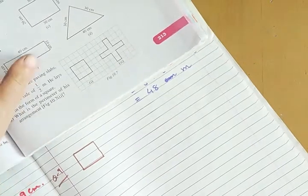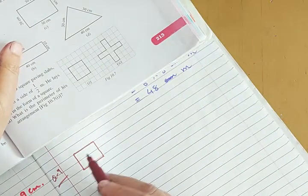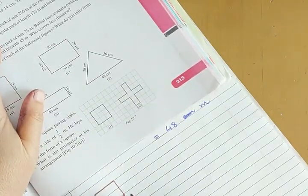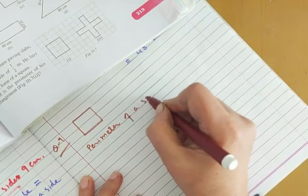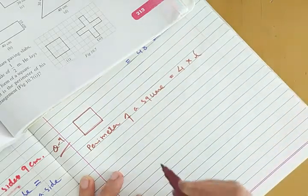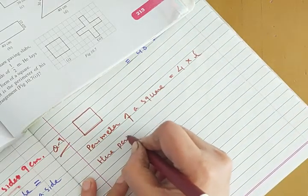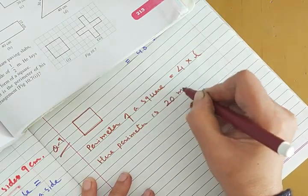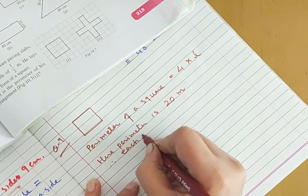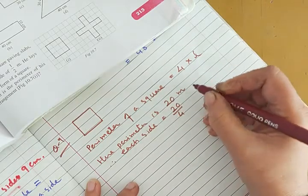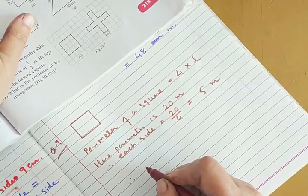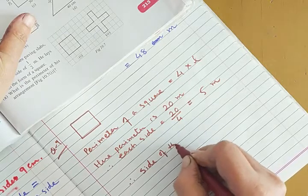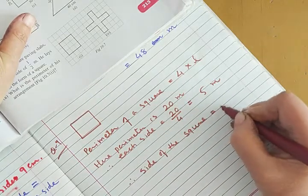Uska pura perimeter diya hai aur uski ek side ka measurement humko find karna hai. Perimeter hai 4 sides ka total. Toh 1 side kitni hogi? 4 se divide karenge. So we will write: perimeter of a square = 4 into L. Here perimeter is 20 meter. Therefore each side is equal to 20 upon 4, which is equal to 5 meter.